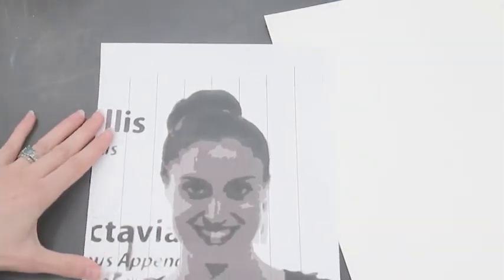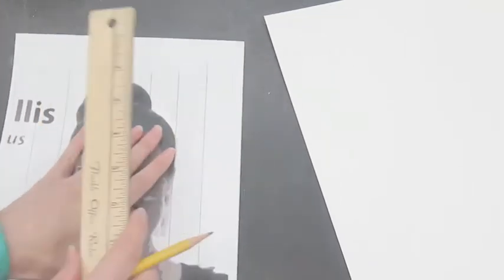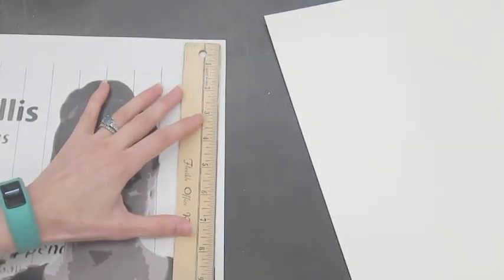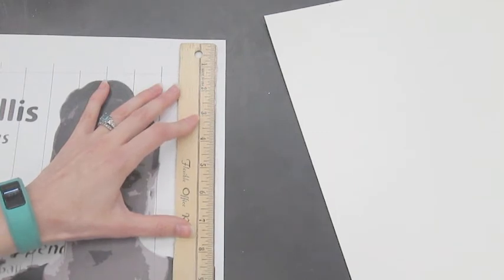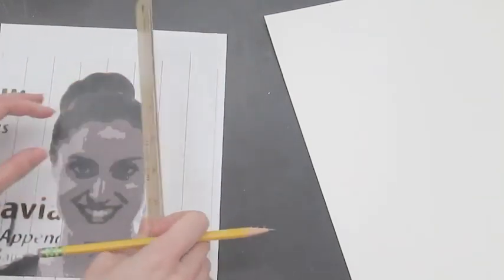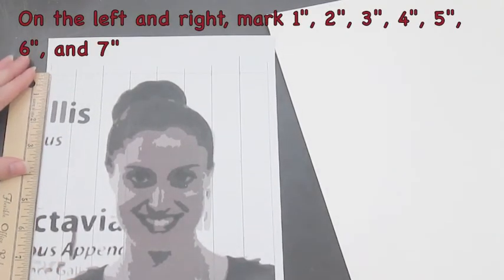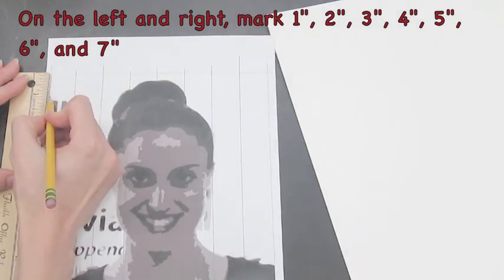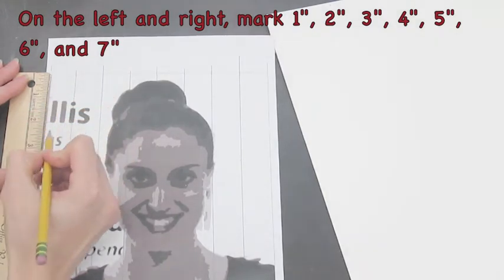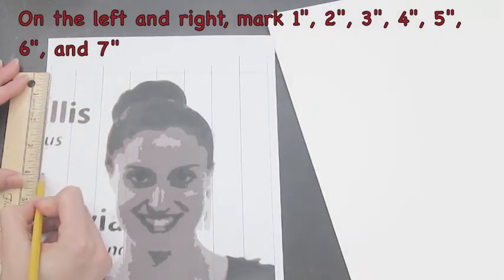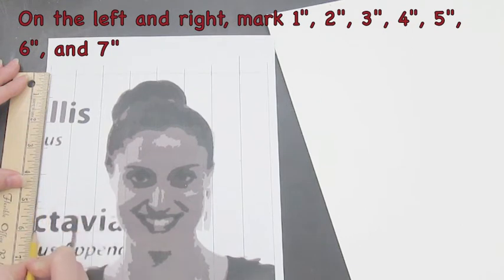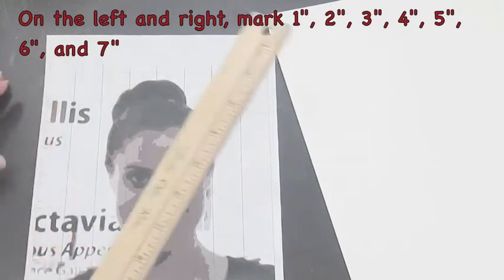Now, I want to repeat that process on the left and right edges, but I don't have a line there, which is why we selected Show Corner Crop Marks when we printed this image from Photoshop. I'm going to use those corner crop marks to connect and make a line so I can see the left and right edges of my image. Then I can mark at 1, 2, 3, 4, 5, 6, and 7 inches on the left side.